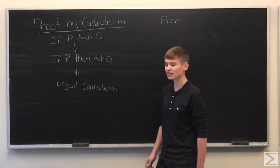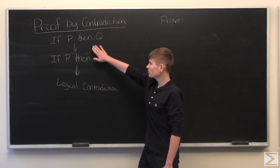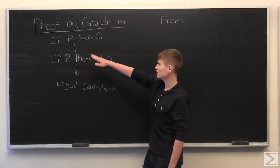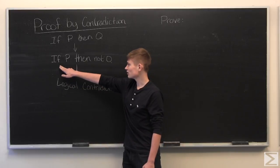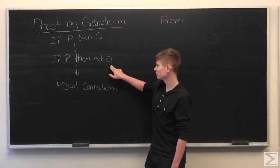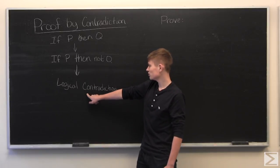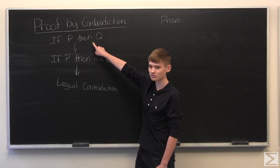The way proof by contradiction works is if you want to prove that P implies Q, so if P then Q. By doing it by proof by contradiction, you state if P then not Q, then you do some logical manipulations, you get to a logical contradiction, therefore this is not true, and therefore this must be true.